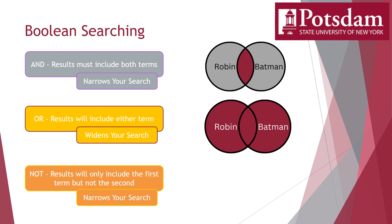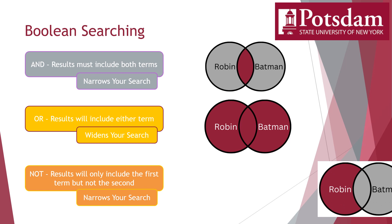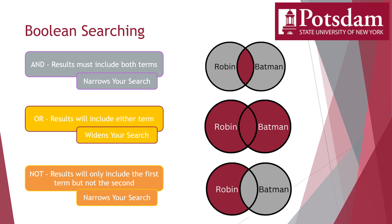Finally, NOT once again narrows your search. When you put NOT between two search terms, the database will only give you articles that include the first term when the second term is not present. So if you search Robin NOT Batman, the database will throw out all articles that mention Batman and all articles that mention Batman and Robin, and will only give you articles that have Robin but no Batman. You might want to do a NOT search if your results are being cluttered by irrelevant articles — say you're doing research on the bird robins but you keep getting articles about comic books. Do a Robin NOT Batman search and all those Batman articles will be gone.